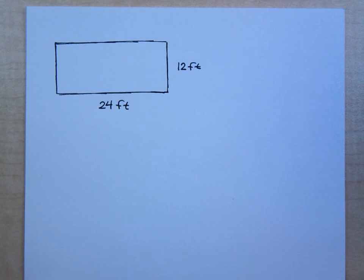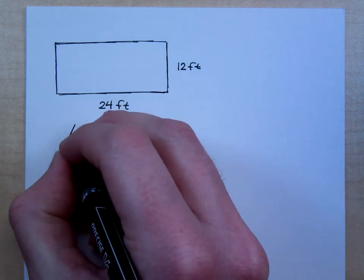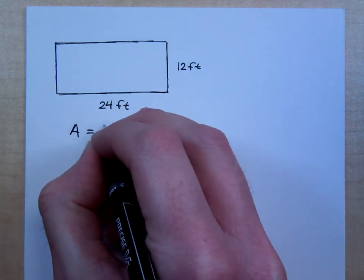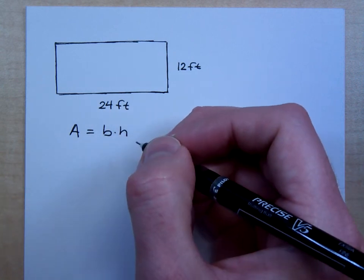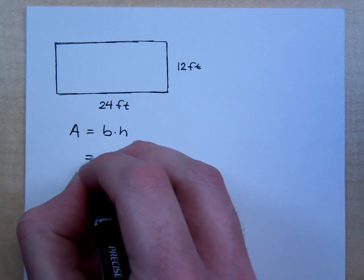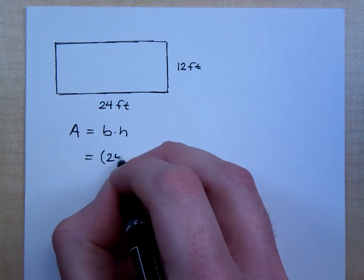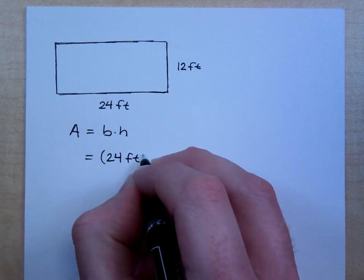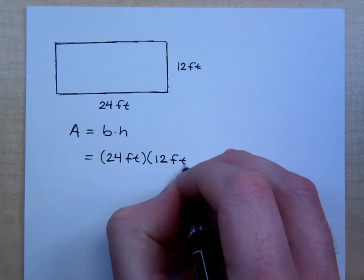Well, S squared would be if I were talking about a square. But I don't have that. I've got a rectangle, right? So, the area is base times height, or length times width, it's the same thing. So, what's the base in this problem? It's 24 feet, and my height was 12 feet.